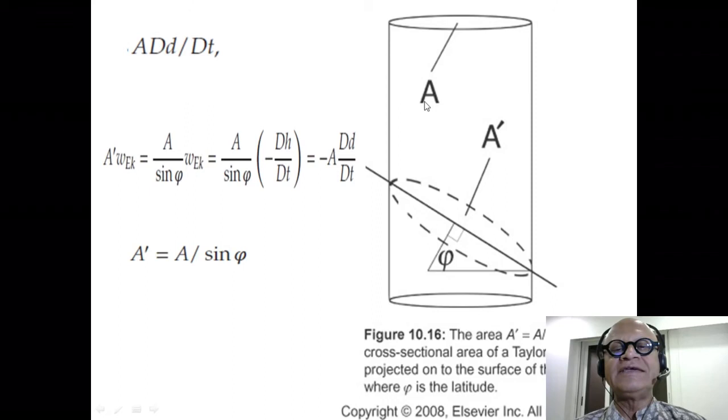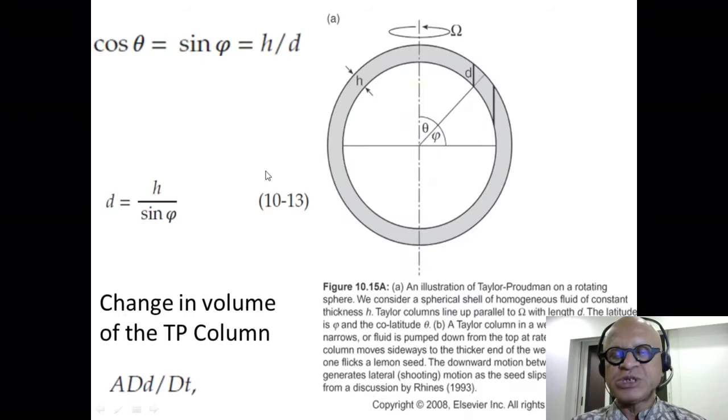We can write A·dD/dt, which is the rate of change of the height of the Taylor column in terms of the volume of fluid being introduced. So A' times the Ekman velocity coming perpendicular to A'. And A' is just A over sin φ. A' is A divided by sin φ.